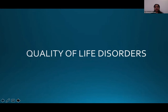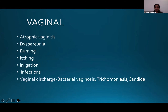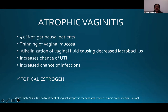Coming to disorders that affect quality of life in this population: there are various vulval and vaginal disorders. The most important one is atrophic vaginitis — almost 45% of Geripause patients have it. This occurs because of thinning of the vaginal mucosa and alkalization of the vaginal fluid, causing a decrease in lactobacilli. This increases the chance of infections overall, and especially urinary tract infections.